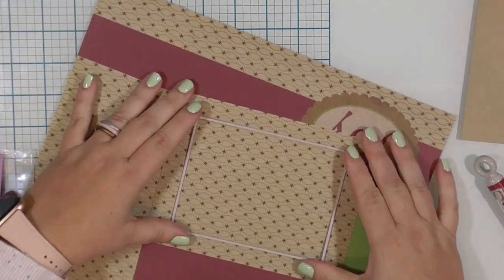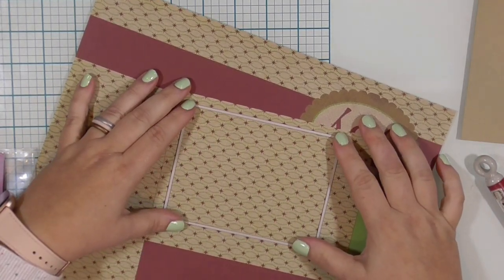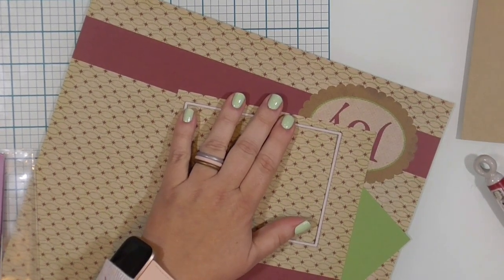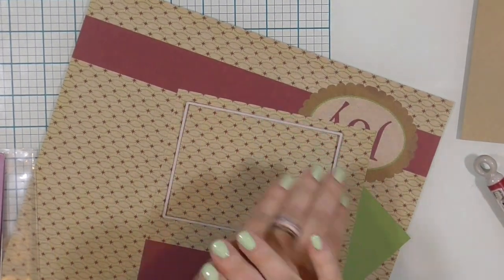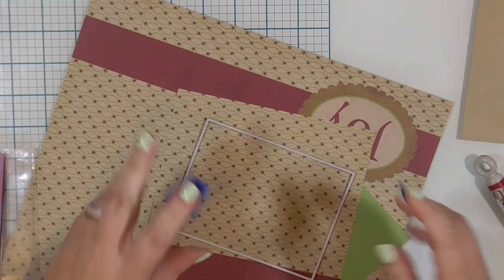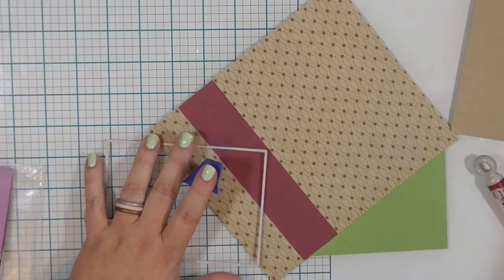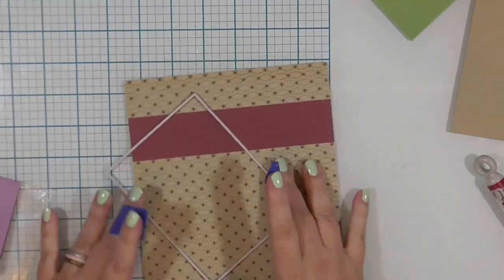So this pattern paper is something from my stash. It's an old, old piece of paper. I don't even know where I got it or how long I've had it. And it has that kind of craft background with some green that you can't really see very well and the red stars.